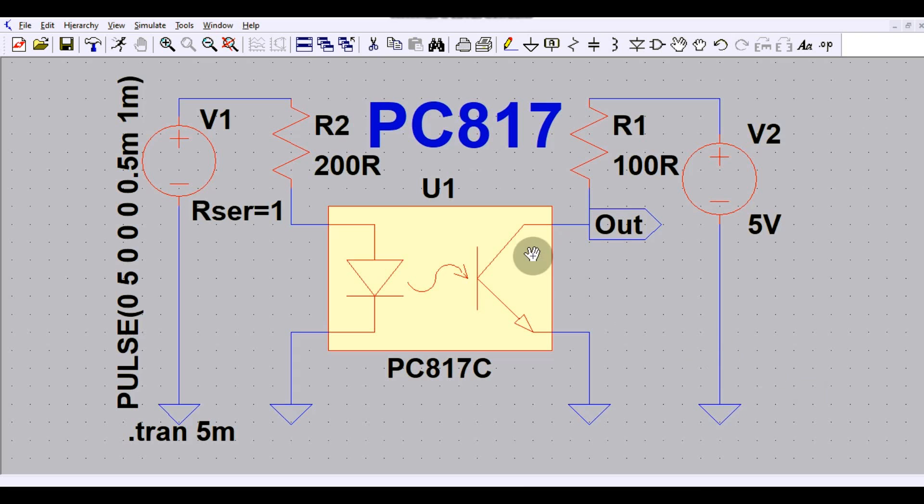Wherever you want to give an isolation between primary or secondary, or between one signal to another signal, or anywhere you need an isolation, you can use this optoisolator or PC817. This is the most commonly used isolator.